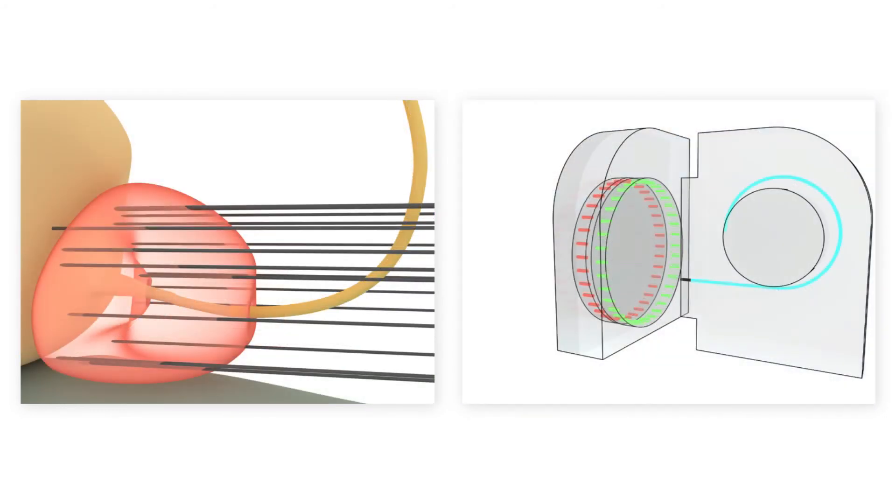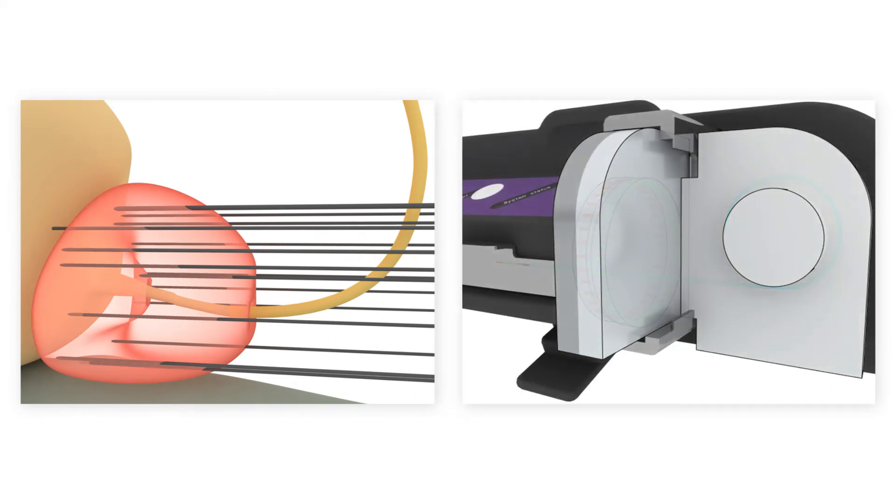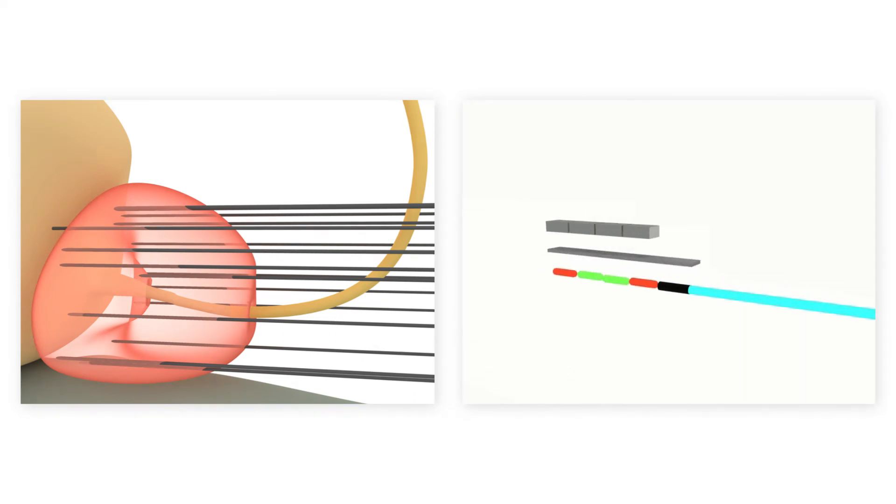For prostate brachytherapy with seeds, the seed selectron transports a seed train into each of the needles. Plan optimization based on the actual situation can be done after each seed train insertion.